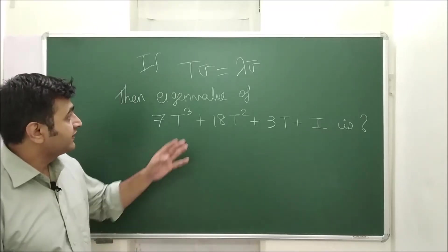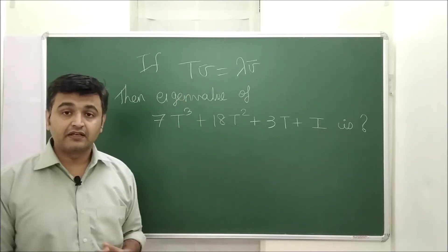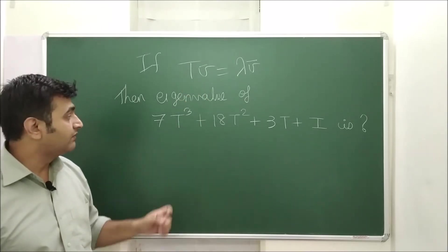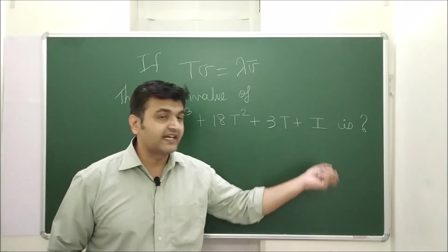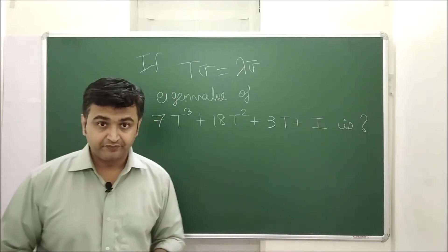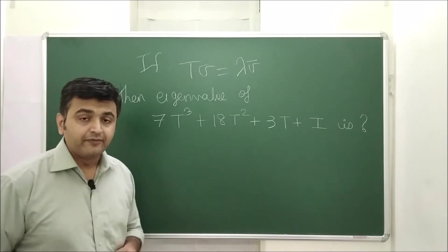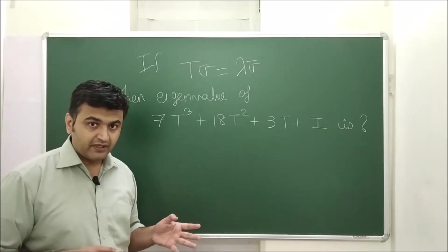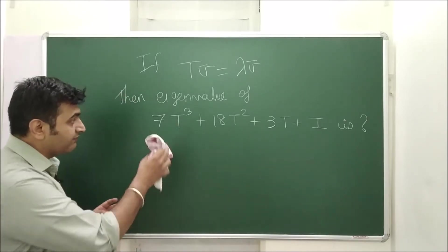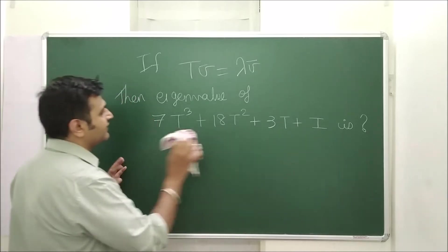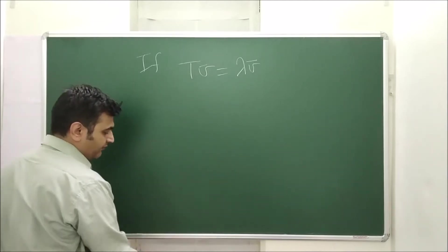Today's question is: if λ is an eigenvalue for the linear operator T and v̄ is an eigenvector, what can you say about the eigenvalue for the operator 7T³ + 18T² + 3T + I, where I is the identity operator? This was asked in an exam. The answer follows from a theorem, so keep the numbers 7, 18, 3 in mind.